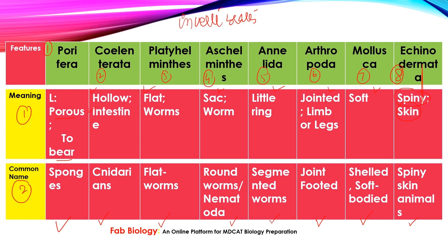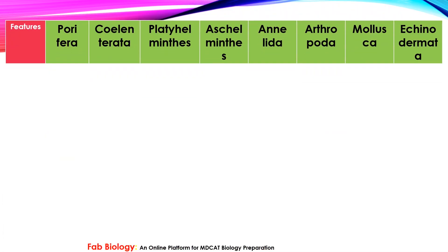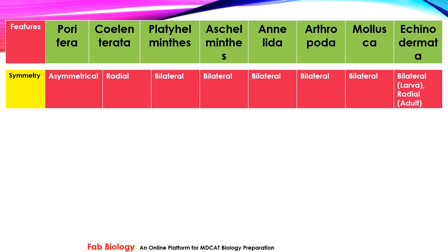Let's move to the next point: symmetry. There are asymmetrical animals. Then there is radial symmetry — radial symmetry means that if we divide the body from any angle, we will always get equal halves. The next element is bilateral symmetry — if we divide it one way, we get equal halves; otherwise we will not.